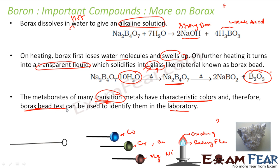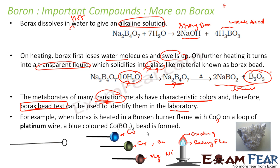In the borax bead test procedure: you take a platinum wire, add borax, and heat it. The water is gone and again you further heat to get the bead. With this bead, you add some metals which you want to identify, and then heat again. In the oxidizing flame you get different colors, and with that you can identify the metal. For example, when you add cobalt to the borax bead and heat it in the oxidizing flame, cobalt gives a blue color.